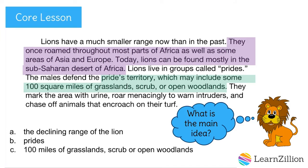Did you choose choice A? Great job! The whole paragraph has to do with the range of the lion, so this will be something I want to include in my introduction. Information about prides and the landscape features give us more information about the range of a lion.